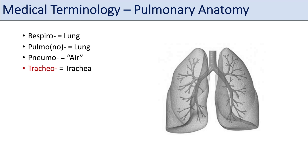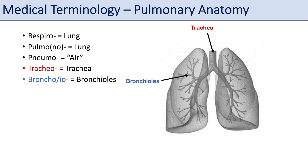Another prefix is tracheo, which relates to the trachea — the windpipe. You're also going to hear the prefixes broncho or bronchio often. Broncho stands for the main stem bronchi more specifically, while bronchio may relate to the bronchioles, the smaller bronchi. The prefix alveol or alveoli refers to the alveoli, the small microscopic air sacs in the lungs where oxygen and gas exchange occur.